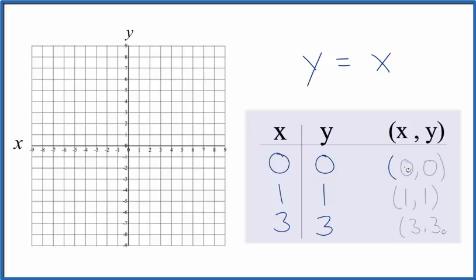So these are the points we'll graph for the equation y equals x. We could have chosen any values for x and got a value for y and that would be on our line. I chose these just because they're going to fit on the graph paper here.